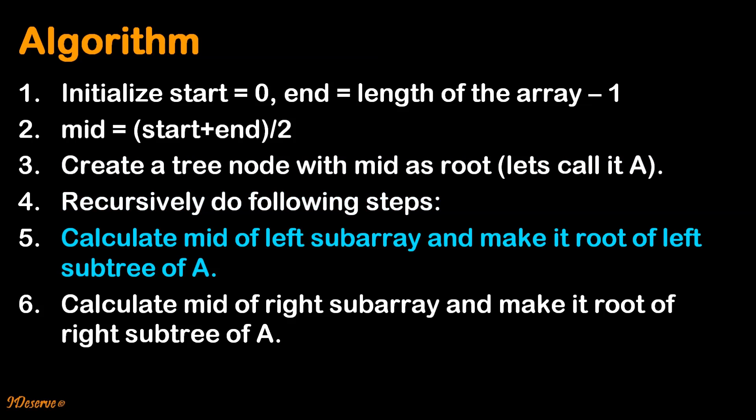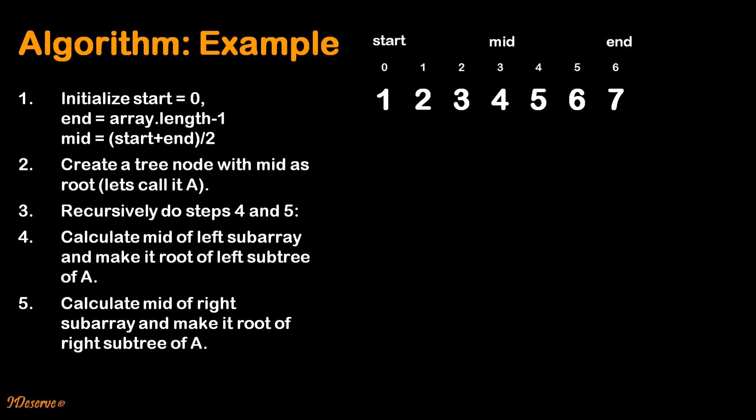Recursively do the following steps: calculate mid of the left sub-array and make it the root of the left subtree of a, then calculate mid of the right sub-array and make it the root of the right subtree of a. For example, initialize start to index 0 and end to index 6. Calculate mid which is start plus n divided by 2, which is 3. Mid divides the array into two parts. Elements to the left of mid are smaller, so the left sub-array creates the left subtree; elements to the right are greater, so the right sub-array creates the right subtree.